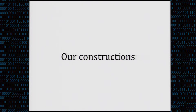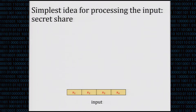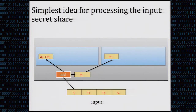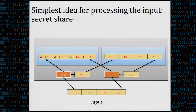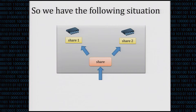Our construction starts by designing the master circuit to be as simple as possible. XOR is probably the simplest operation. So we secret-share the input using a two-out-of-two XOR secret sharing: for inputs X1 to X4, we take a random Ri, producing shares Xi plus Ri and Ri. For example, X1 plus R1 and R1, X2 plus R2 and R2, and so on up to X4 plus R4 and R4. The input is shared to two devices by secret sharing.